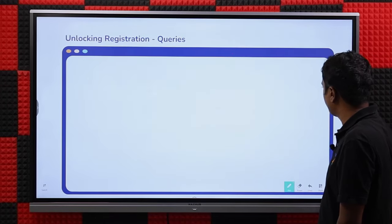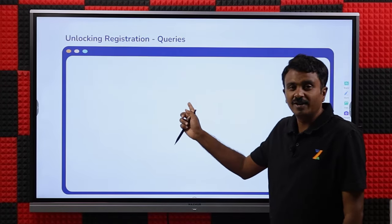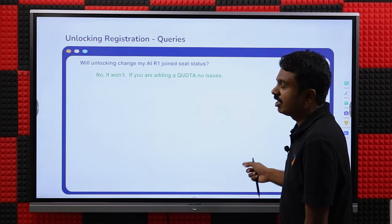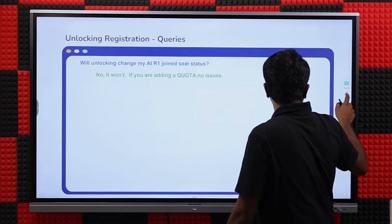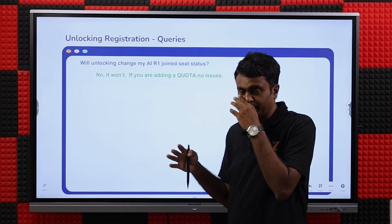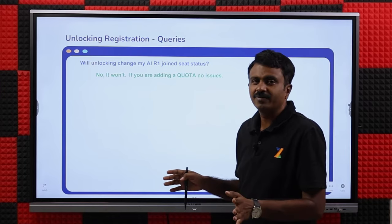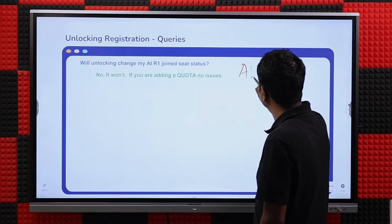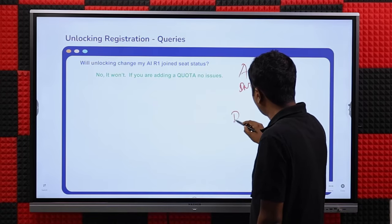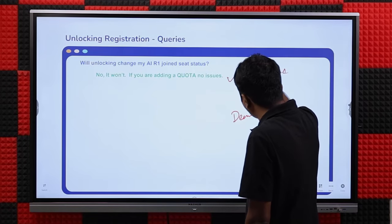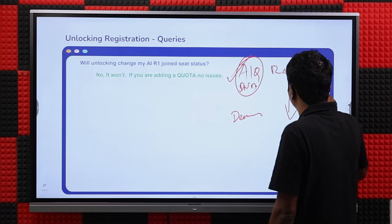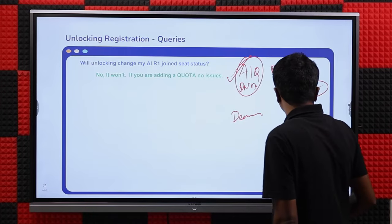Will unlocking change your All India Round 1 status? No, it will not. If you have an AAQ or DNB seat in All India Round 1 and you unlock, you will still be holding that seat — but you will be able to fill all choices in Round 2. Unlocking will not change your seat; your seat will still be with you.